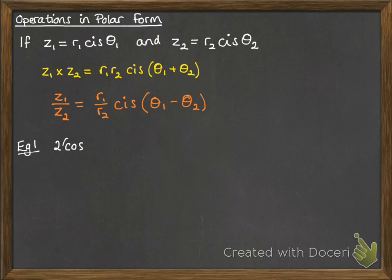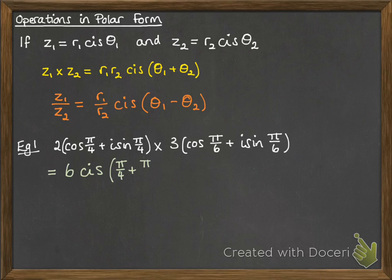So for example, if you've got this sort of problem, then you are going to do 2 times 3 makes 6, and add the arguments. So it's pi by 4 plus pi by 6, which is pi by 24. And if you need to write it out in full instead of using the cis notation, it would look like that.